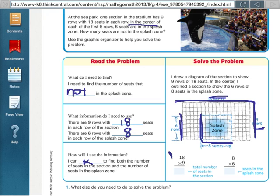First problem: 18 times 9, when you work that out... sorry, this should be 162. Second problem: 8 times 6 is 48. So I'll do 162 seats in total, take away 48 in the splash zone. 162 minus 48 equals 114.